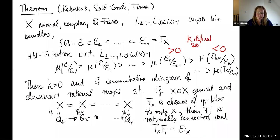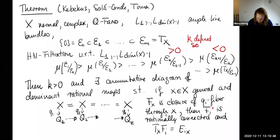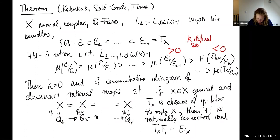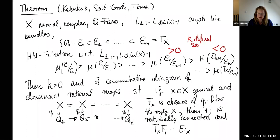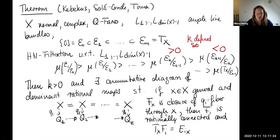They then show there is a commutative diagram of dominant rational maps. For a general point X, with F(X) the closure of the Q_i fiber at X, there are quotient maps from X to Q1, Q2, up to QK. The fibers of these quotients are rationally connected, and the tangent bundle restricted to the fiber at point X is exactly the corresponding element of the Harder-Narasimhan filtration.